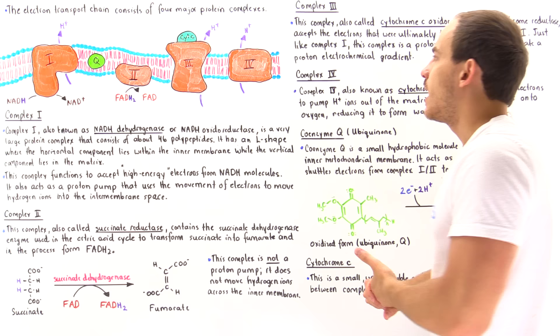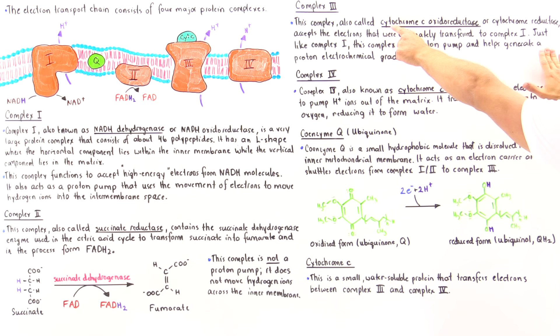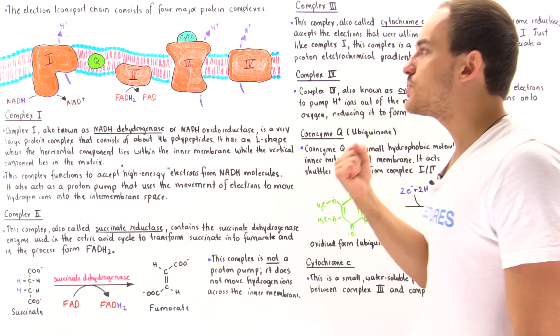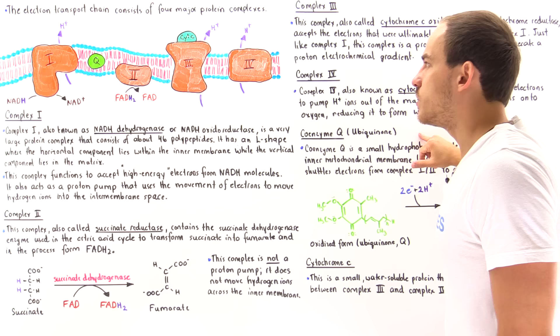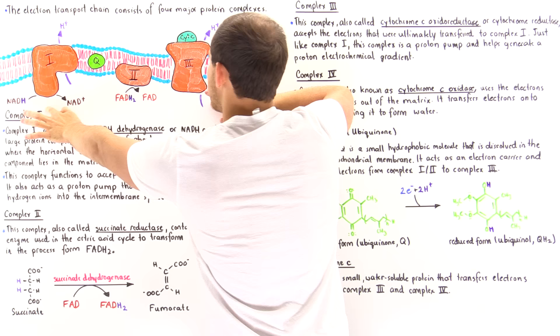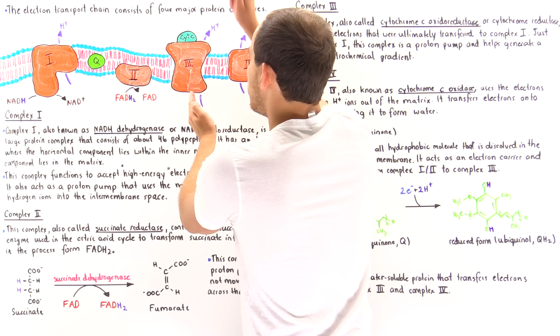Complex 3 is also known as cytochrome C oxidoreductase, or Q cytochrome C oxidoreductase, and sometimes as cytochrome reductase. This complex accepts those electrons from the Q carrier molecule — ubiquinone — and then transfers them onto another electron carrier known as cytochrome C. Just like protein complex 1, complex 3 is also a proton pump, and the movement of those electrons within the complex allows it to pump protons into the intermembrane space from the matrix of the mitochondria.